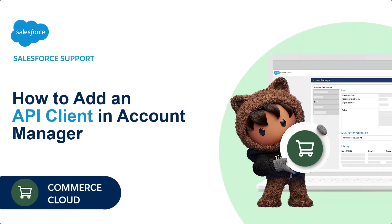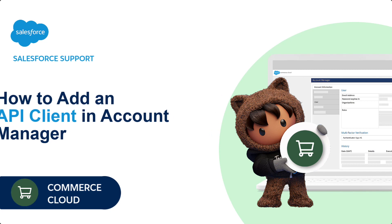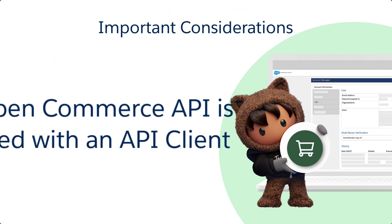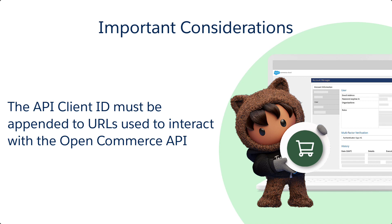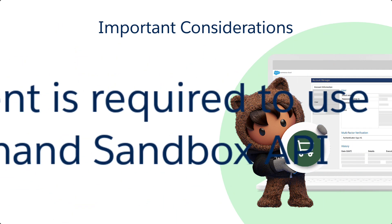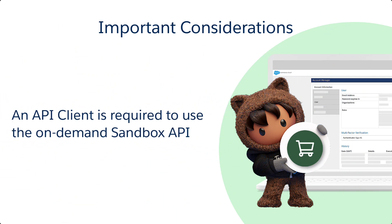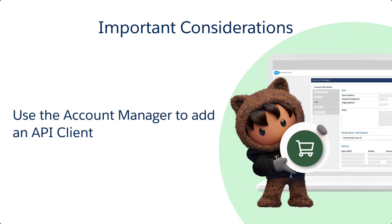Thank you for joining this quick how-to video brought to you by Salesforce Support. In this video, we'll learn how to add an API client in Account Manager. The OpenCommerce API is accessed with an API client, and the API client ID must be appended to URLs used to interact with the OpenCommerce API. An API client is also required to use the On-Demand Sandbox API. As an account administrator, you can use the Account Manager to add these API clients.